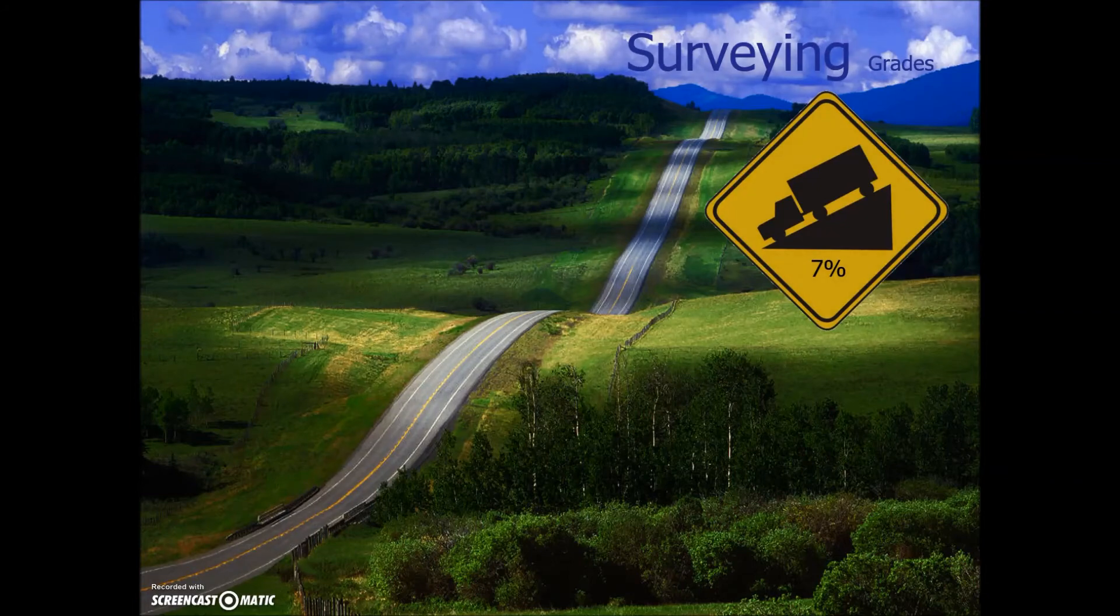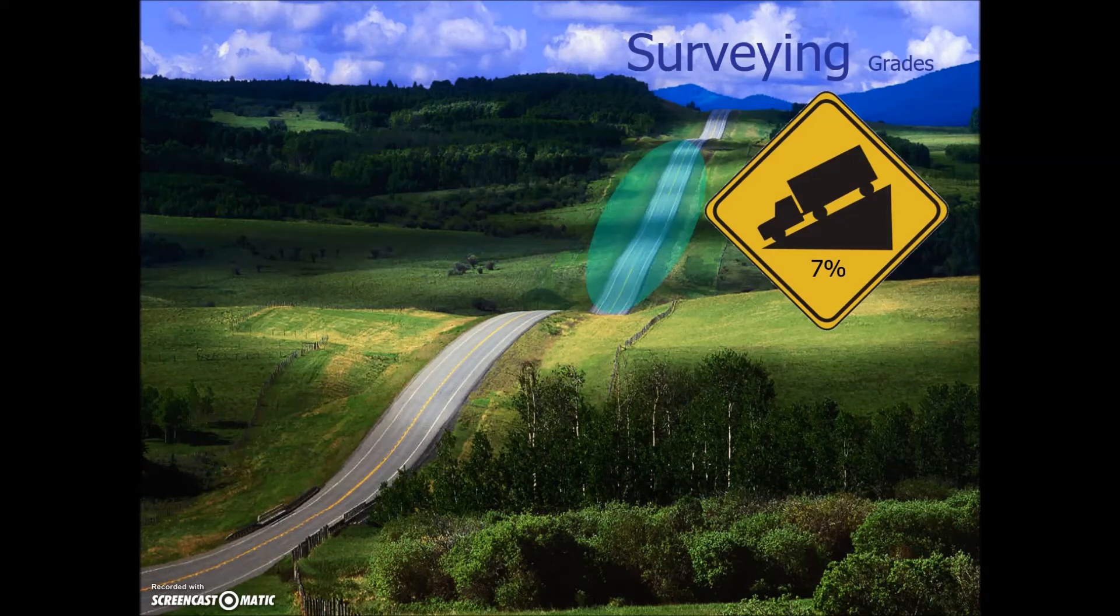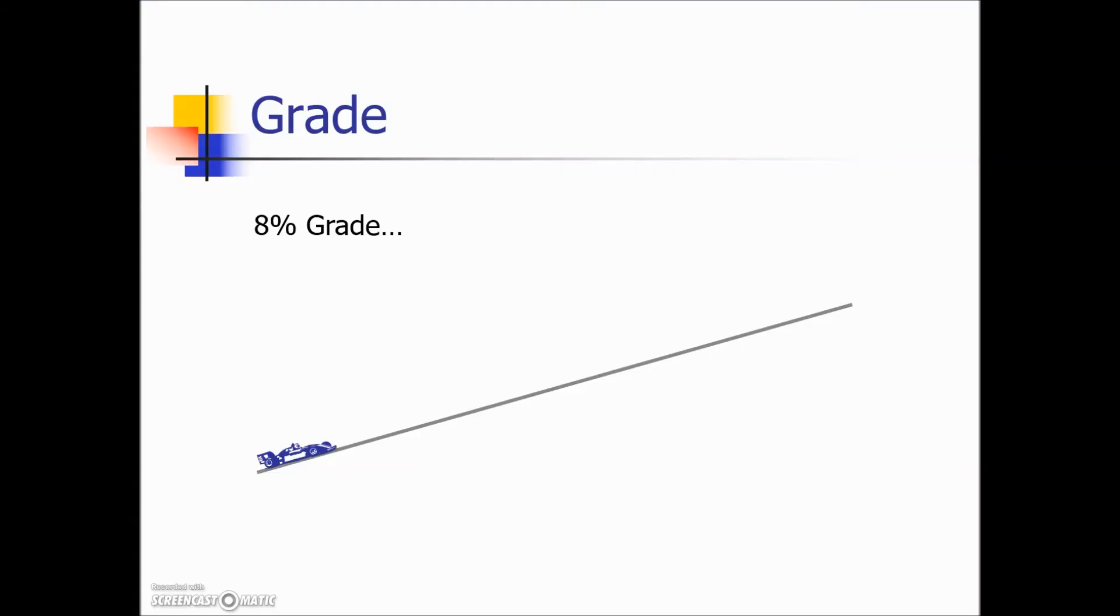Another area that we see applications is on grades. You may have seen signs like this. It's dealing with the steepness of the slope of the road. And what that means if for example we have a grade of 8% this means that for every 100 units of horizontal distance traveled it gains 8 feet in elevation.